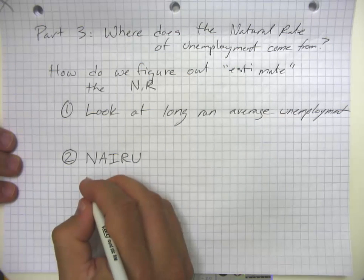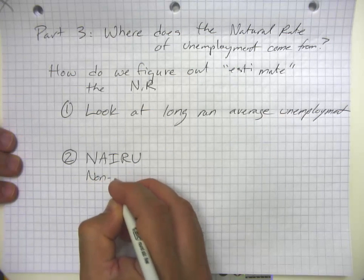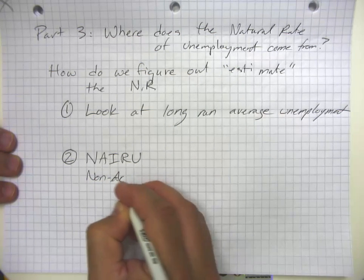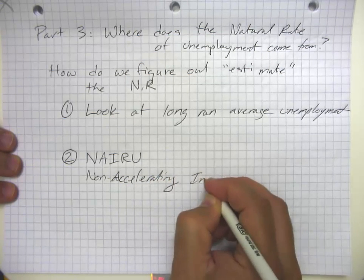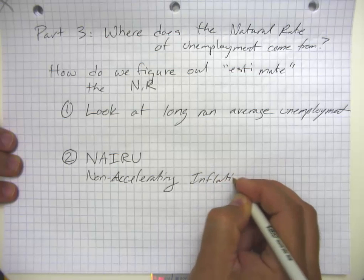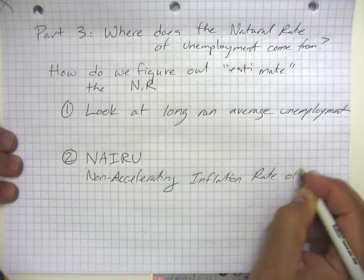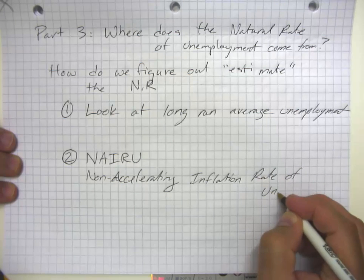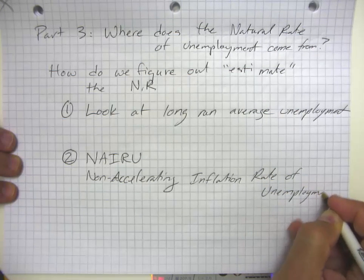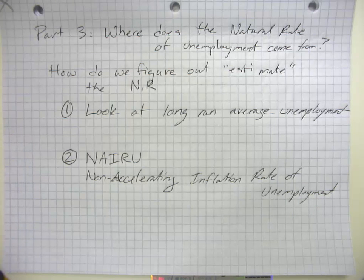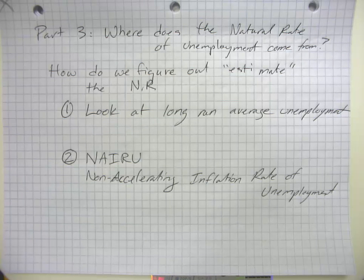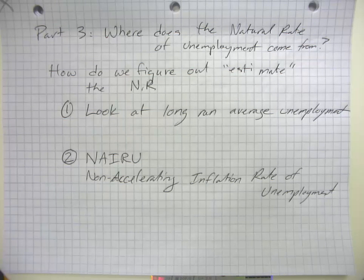The other way of looking at it is more related to what economists call the NAIRU, which stands for the Non-Accelerating Inflation Rate of Unemployment. The idea here is that when we stimulate the economy — when we ask it to produce more goods and services — that's going to cause more workers to be hired and the unemployment rate to go down.